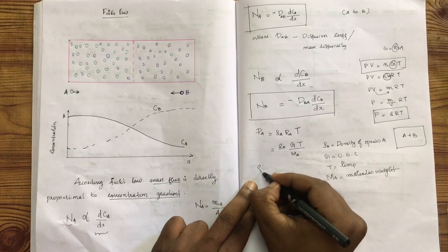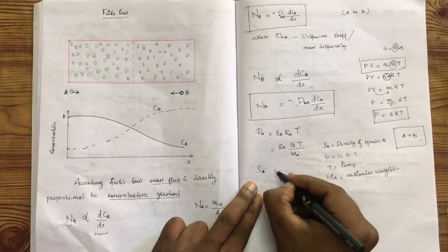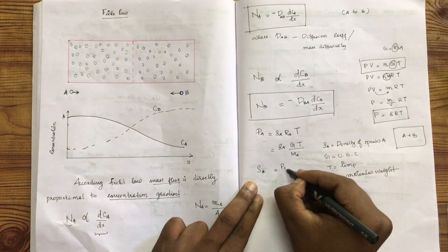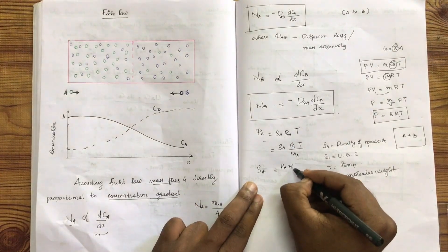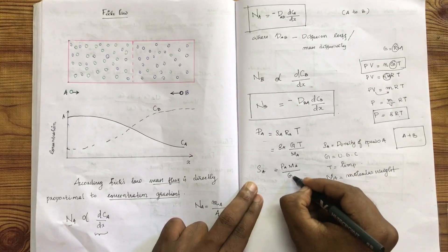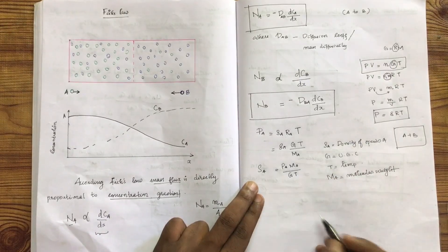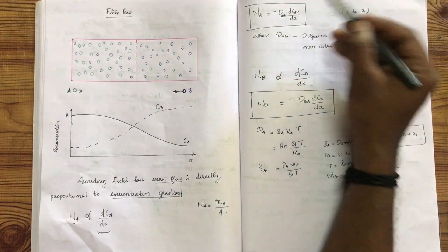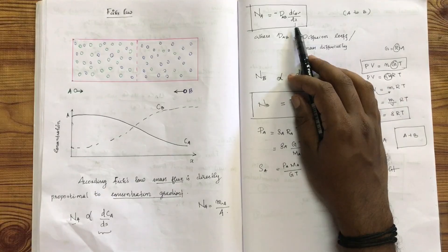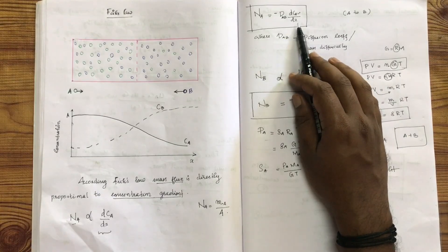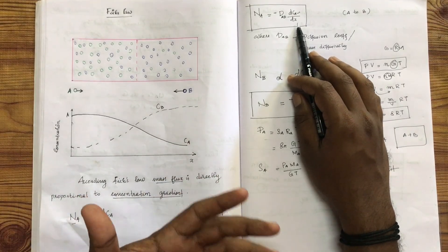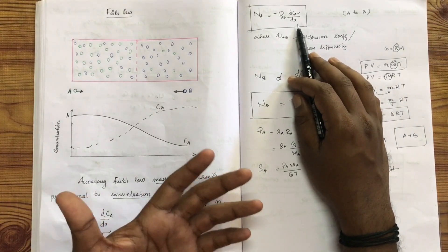Let's see how this is going to be. Rho A is equal to mA0. PA into mA by GT. This is the mass concentration.